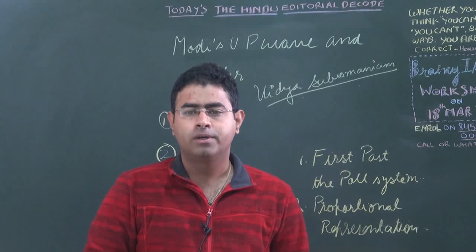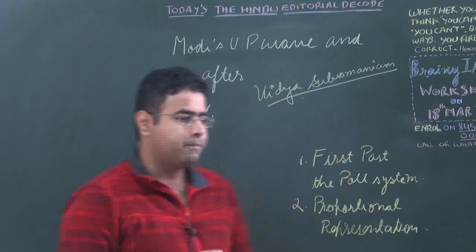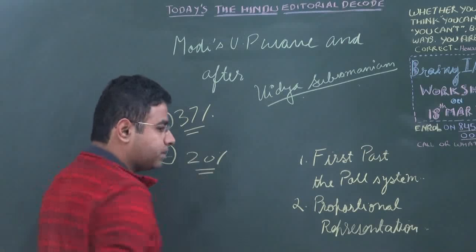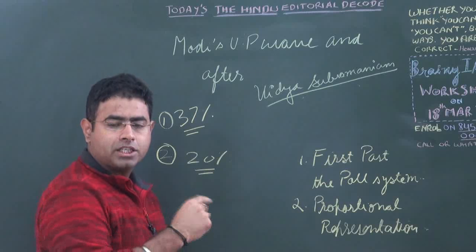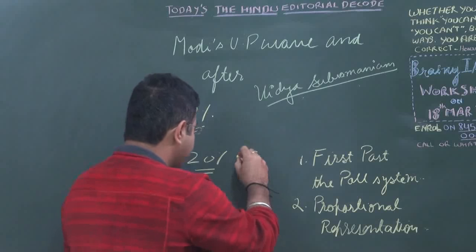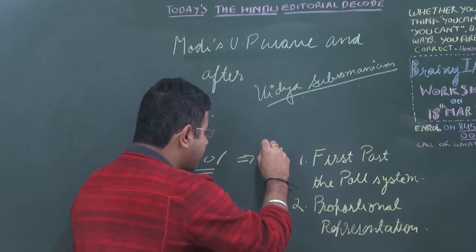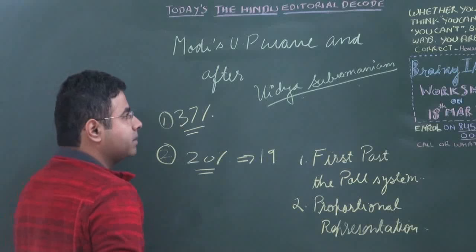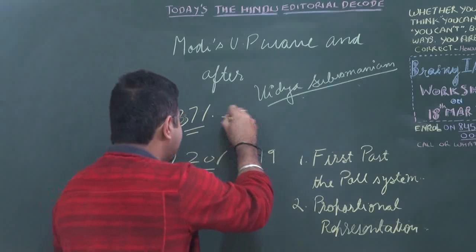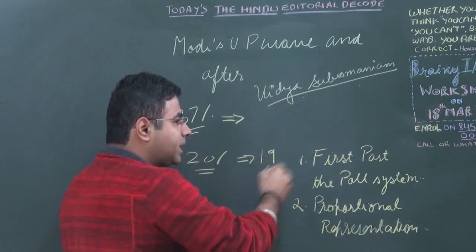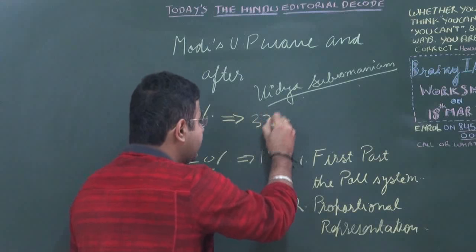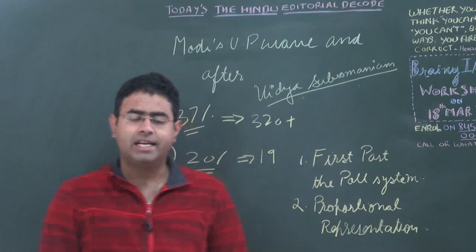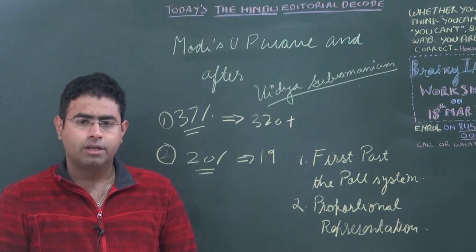Take the example of Bahujan Samaj Party. BSP got about 20 percent of the votes polled in Uttar Pradesh, but despite getting 20 percent of the votes, BSP got just about 19 seats. Whereas BJP got about 37 percent of the votes, and with that 37 percent it was able to get about 320 plus seats in the state legislative assembly.